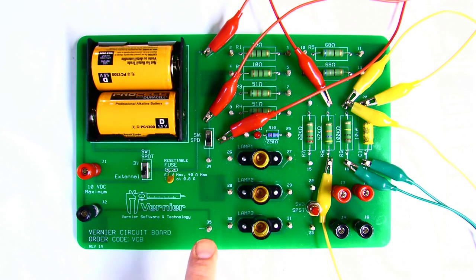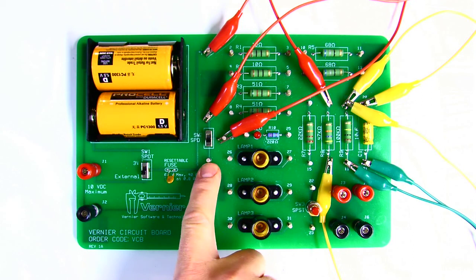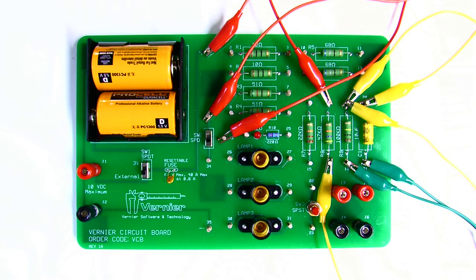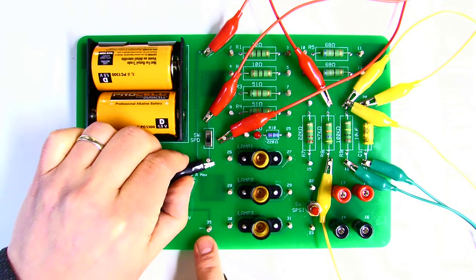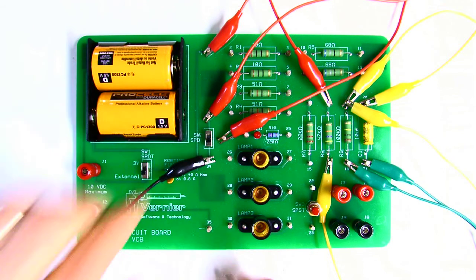In the bottom part of the circuit, the other part of the double throw switch wires directly to the negative side of the battery. I'm going to wire that down to here on the circuit board, which is connected to the negative side of the battery.